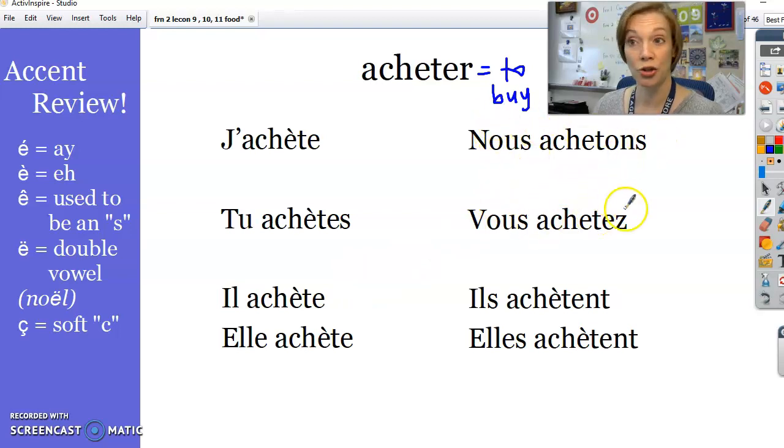Nous achetons. Vous achetez. Ils achètent. Elles achètent. Nothing crazy. In fact, this is a regular ER verb where you drop the ER and you change the endings. E-E-S-E-O-N-S-E-Z-E-N-T. Those endings have been the same ever since French 1 for ER verbs. So that's good news. But there is a teeny tiny change that you have to make. Besides the ending, there is a stem change. The stem is the first part of the verb. Look at what's going on here. J'achète has an accent grave. Tu achète has an accent grave. Il achète. Elle achète. Both have accent grave.